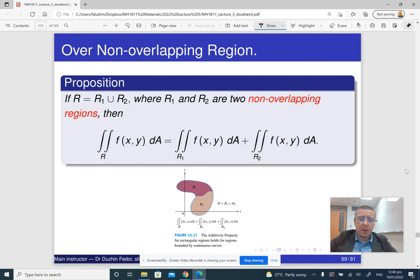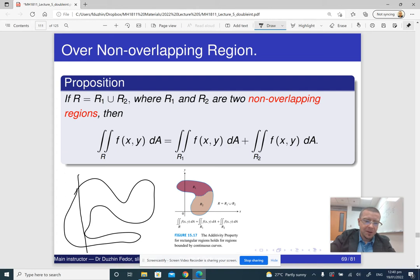The first property is that if we have a double integral over two non-overlapping regions, then the integral of the union of two regions is the sum of two integrals. This is important if we want to integrate over some complicated regions. If you really want to integrate over something like this, you can always slice it into several parts of type one or type two and take the integral over each part independently and then add them together.